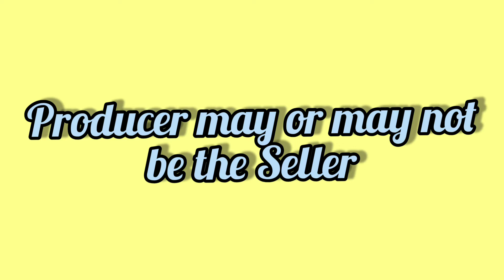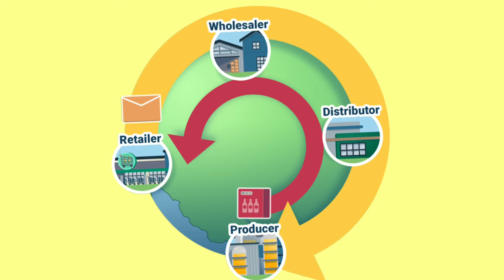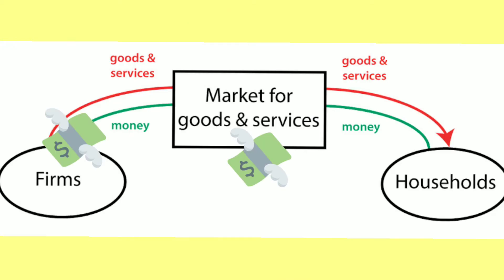That middleman then becomes the seller of those crops to us at a slightly higher price. So the producer — the farmer — is not the same as the seller. He sells his product to someone who in turn sells the same product to us. A producer may not essentially be a seller; there are different persons in between, and in this way the price of a product is determined.